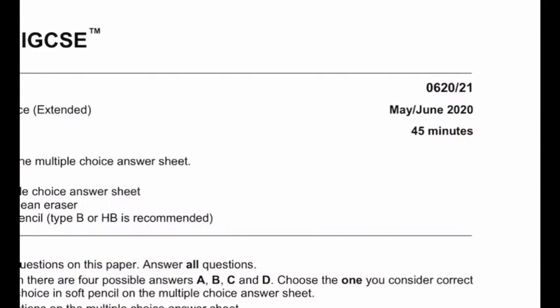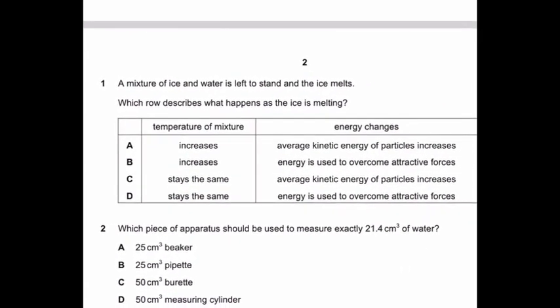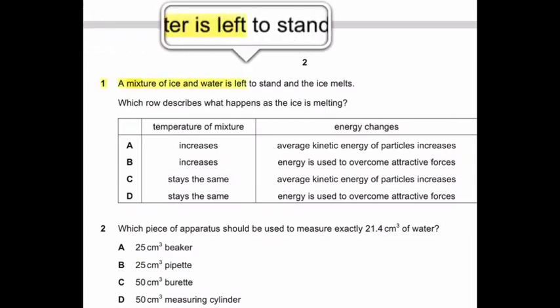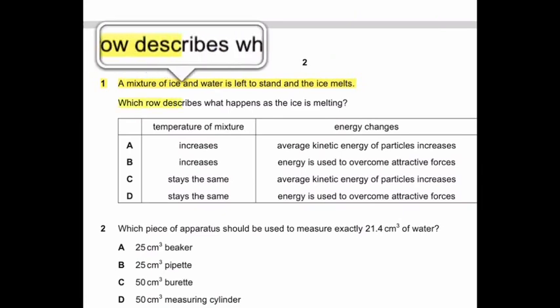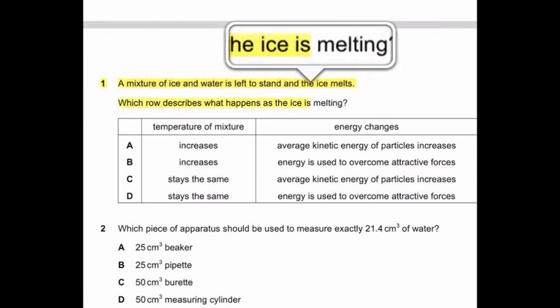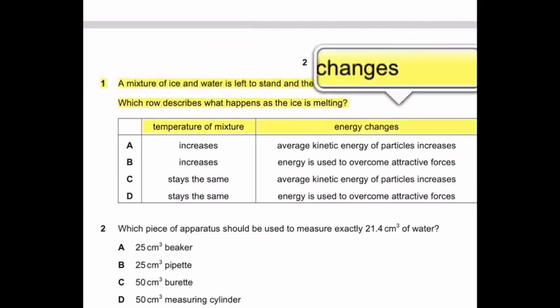The duration for Paper 2 is 45 minutes. Question number 1: A mixture of ice and water is left to stand and the ice melts. Which row describes what happens to the ice as ice is melting? Temperature of mixture, energy changes.